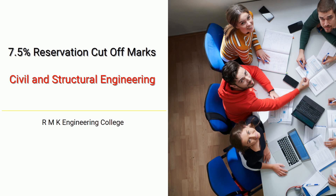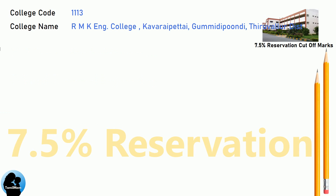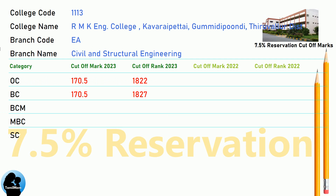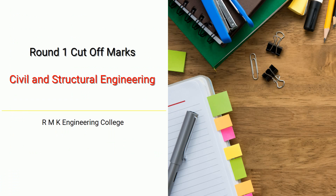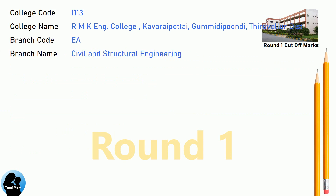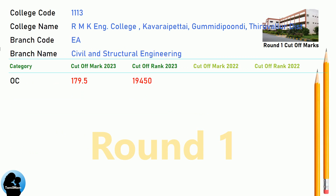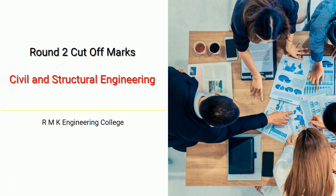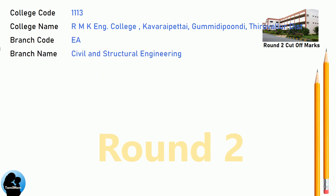DNEA 7.5 Reservation Cut-off, DNEA Round 1 Cut-off, and DNEA Round 2 Cut-off for RMK Engineering College in Civil and Structural Engineering.